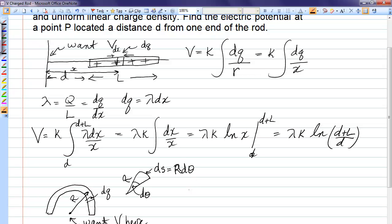So now when I define my linear charge density, lambda, I have a little bit of charge over a little bit of arc, which becomes r d theta. So dq now becomes lambda r d theta.